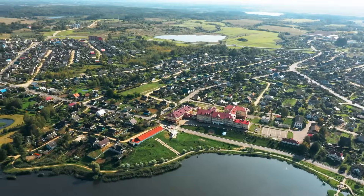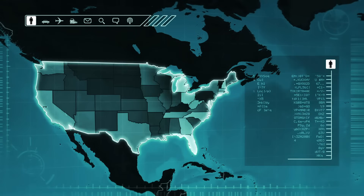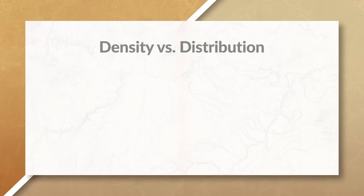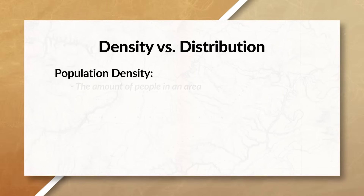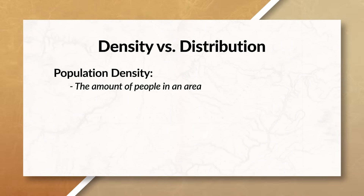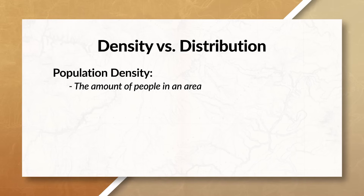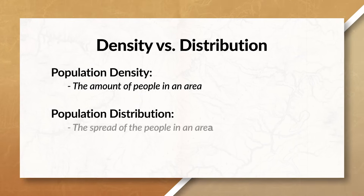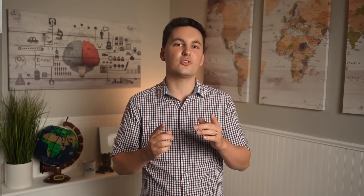As countries, cities and regions see their populations fluctuate, they're faced with different political, economic, social and environmental challenges. When we talk about population density we're talking about the number of people living in a specific geographic area. And when we talk about population distribution we are talking about the spread of people in a geographic area. Depending on the density and the distribution of a population we can see different opportunities and challenges for a society.